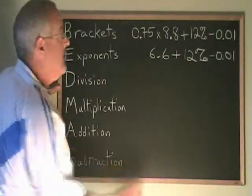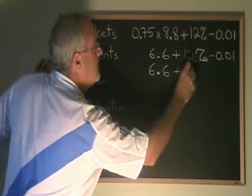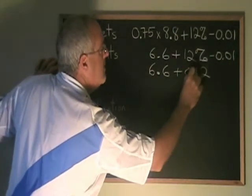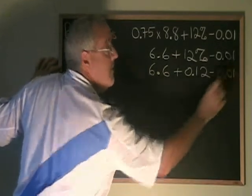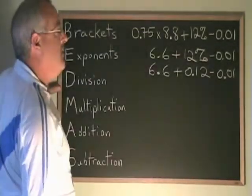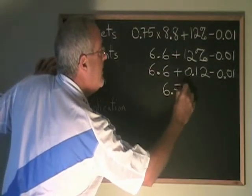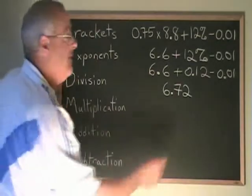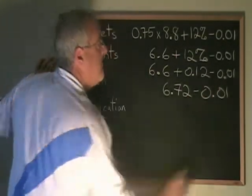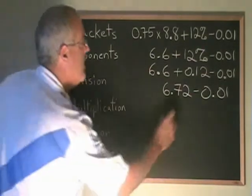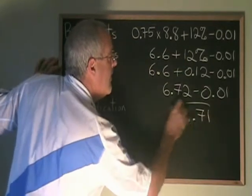So it becomes 6.6 plus 0.12 minus 0.01. 6.6 plus 0.12 is equal to 6.72, and I copied down the rest of the problem: minus 0.01. 6.72 minus 0.01 is equal to 6.71. That's my answer.